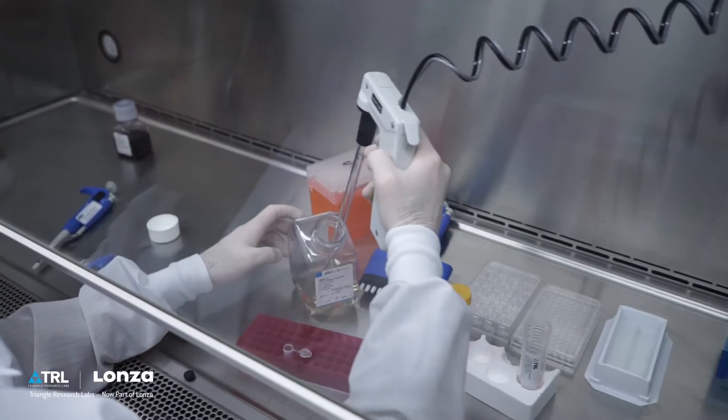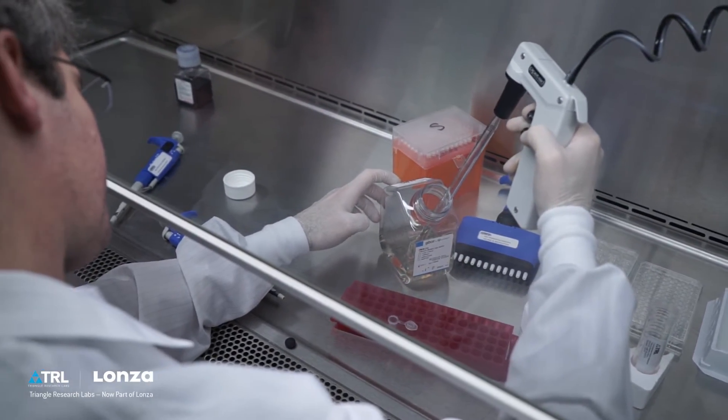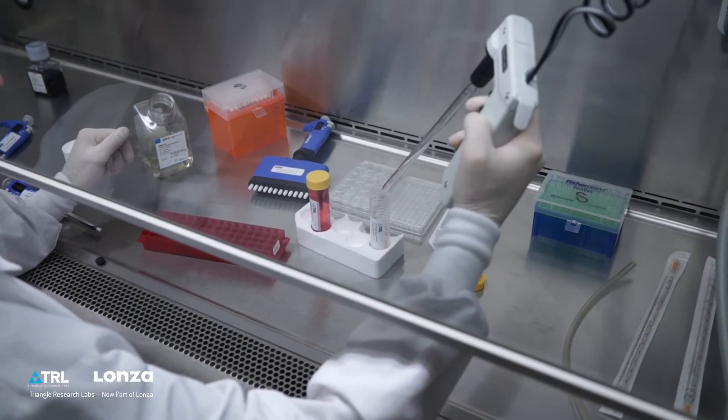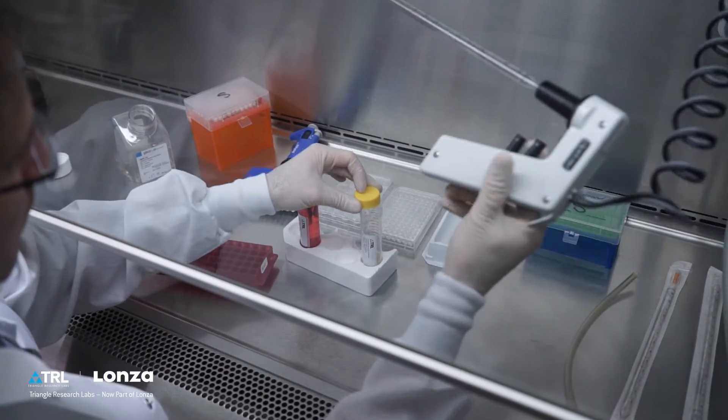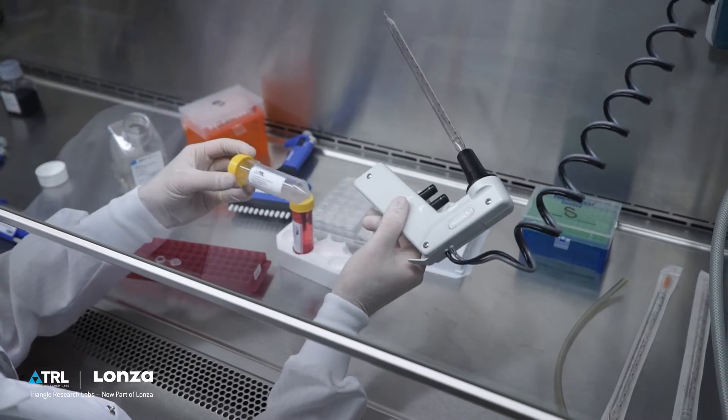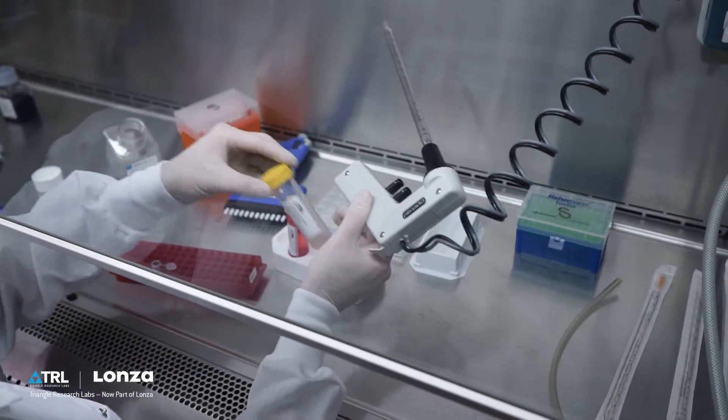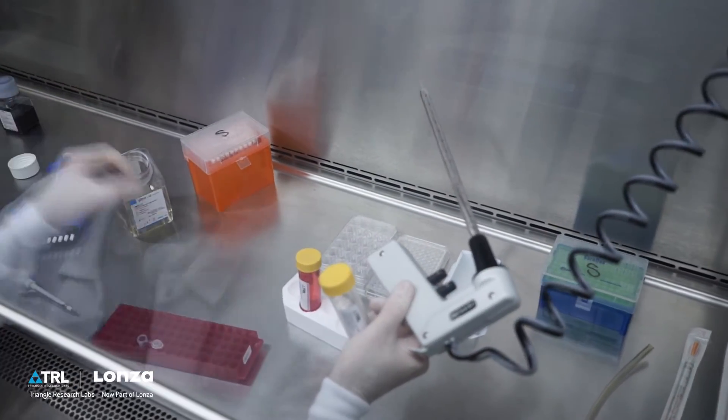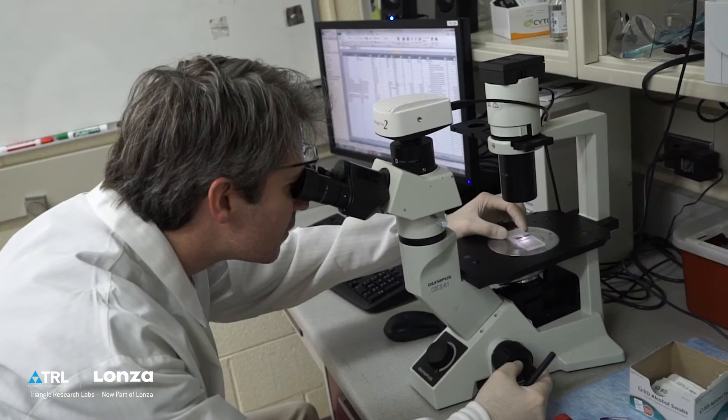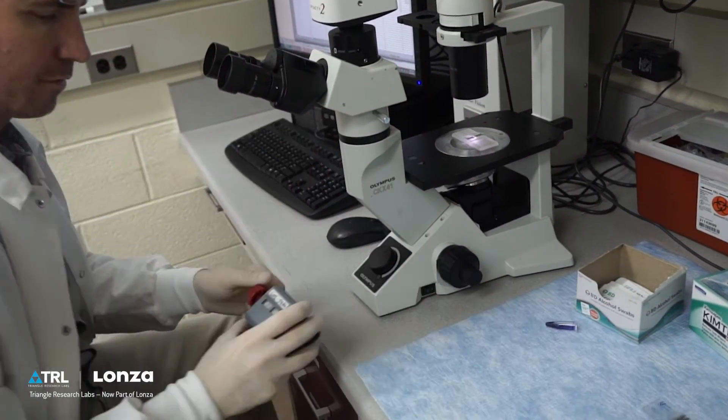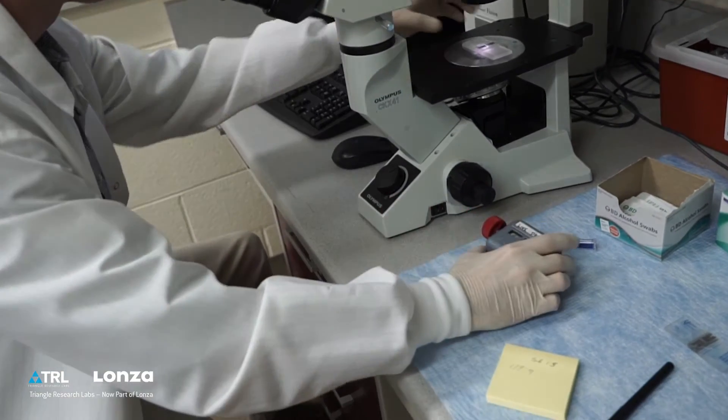Resuspend the cells by adding approximately 0.8 milliliters of plating medium per million cells expected. Gently rock the tube back and forth. Count the cells to determine the post-thaw viability and yield. Refer to the Trypan Blue cell counting protocol.